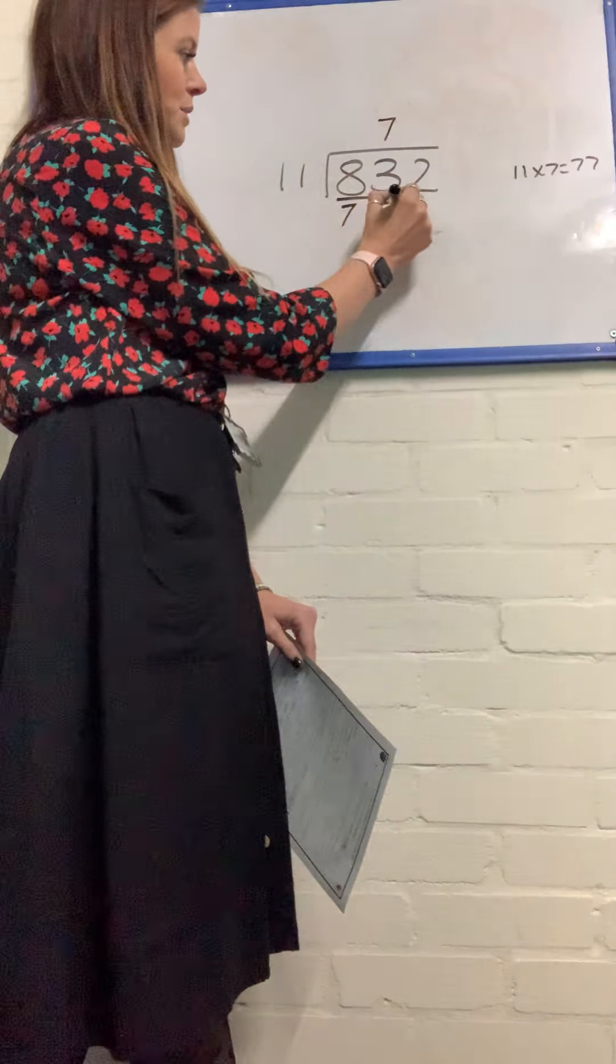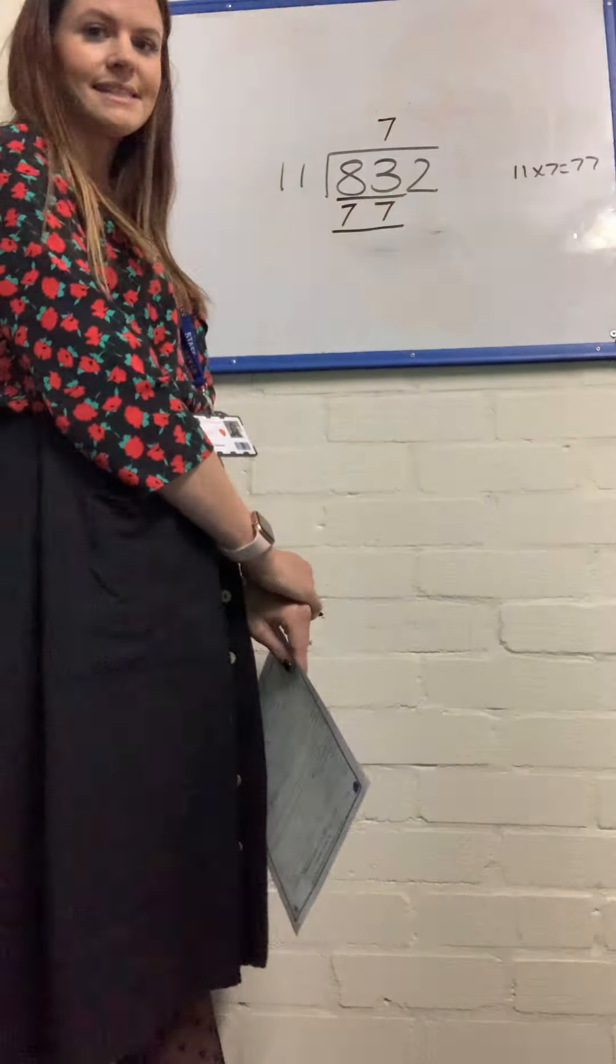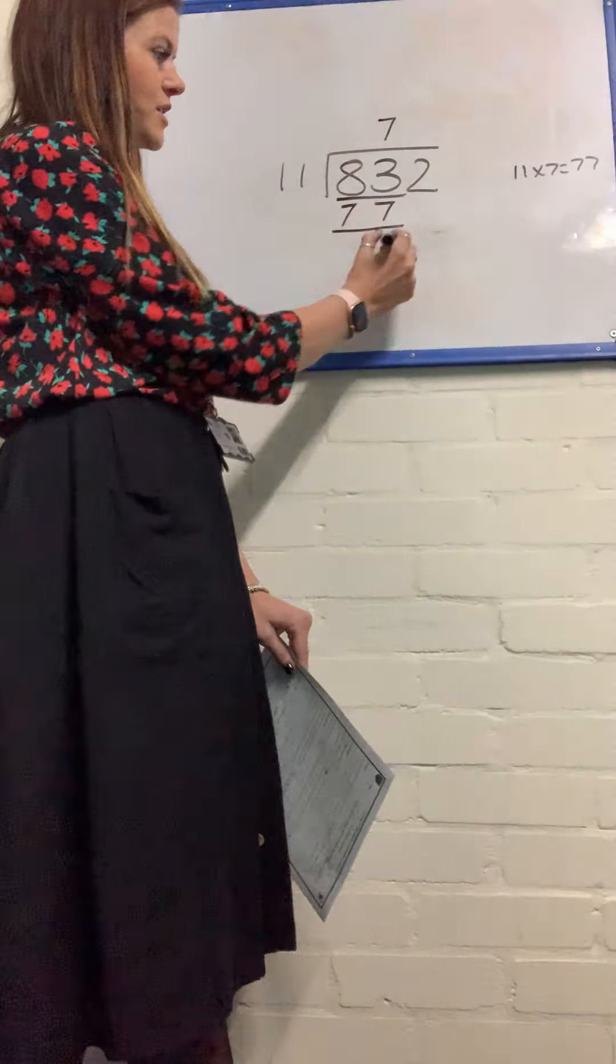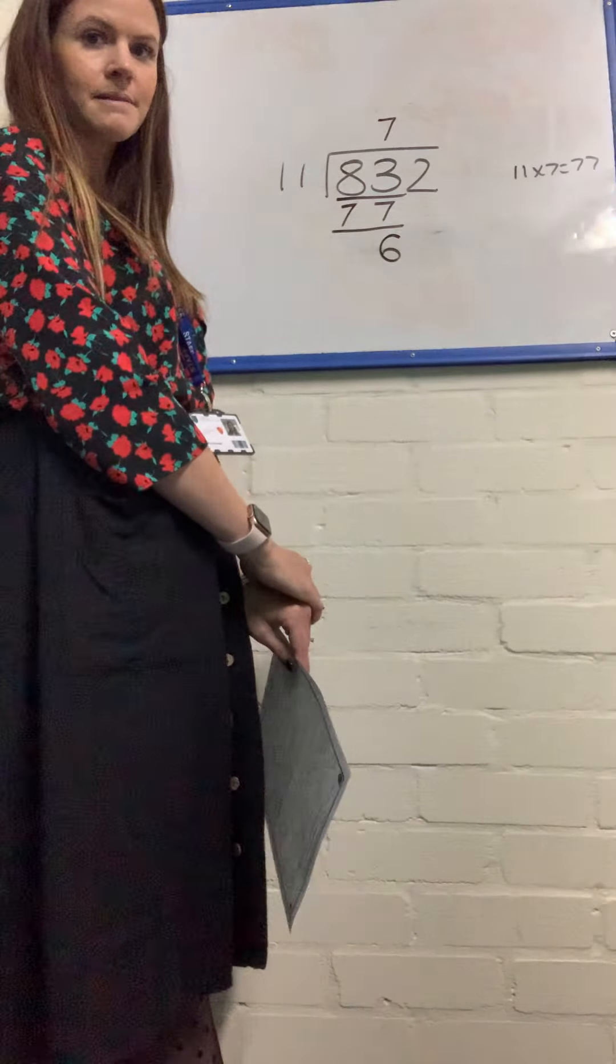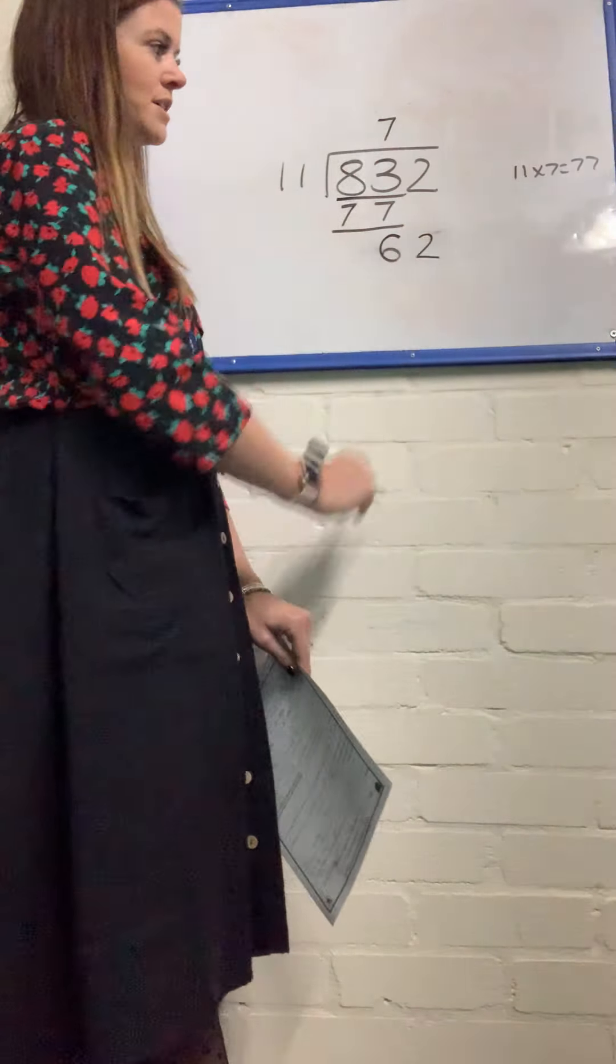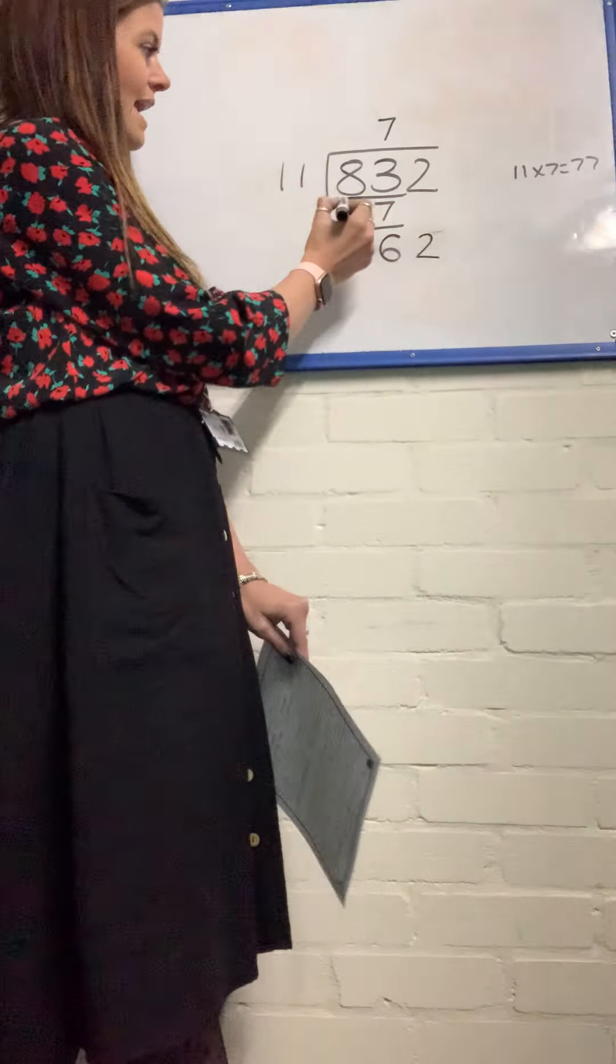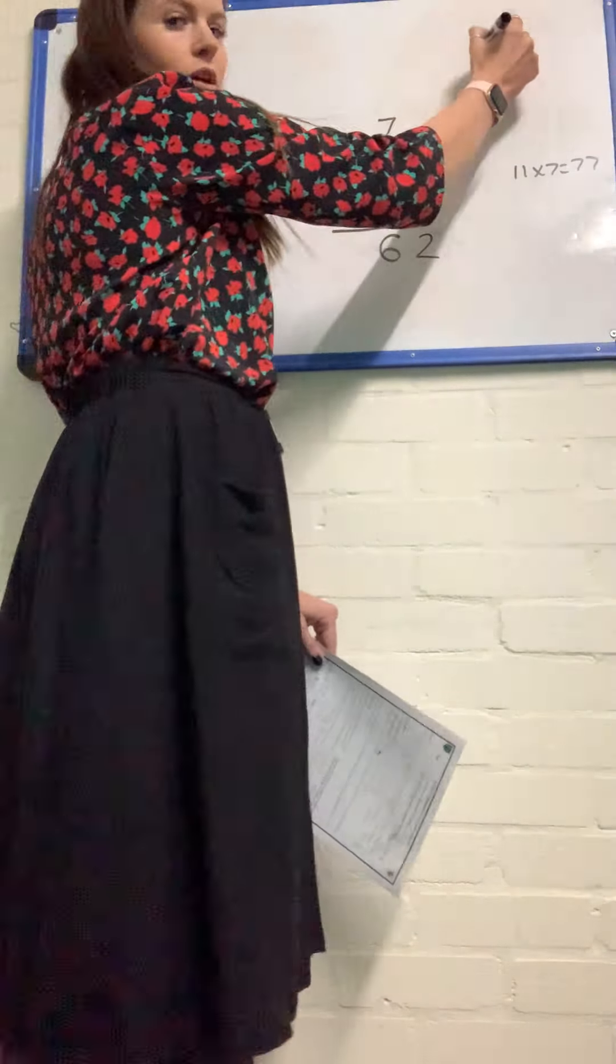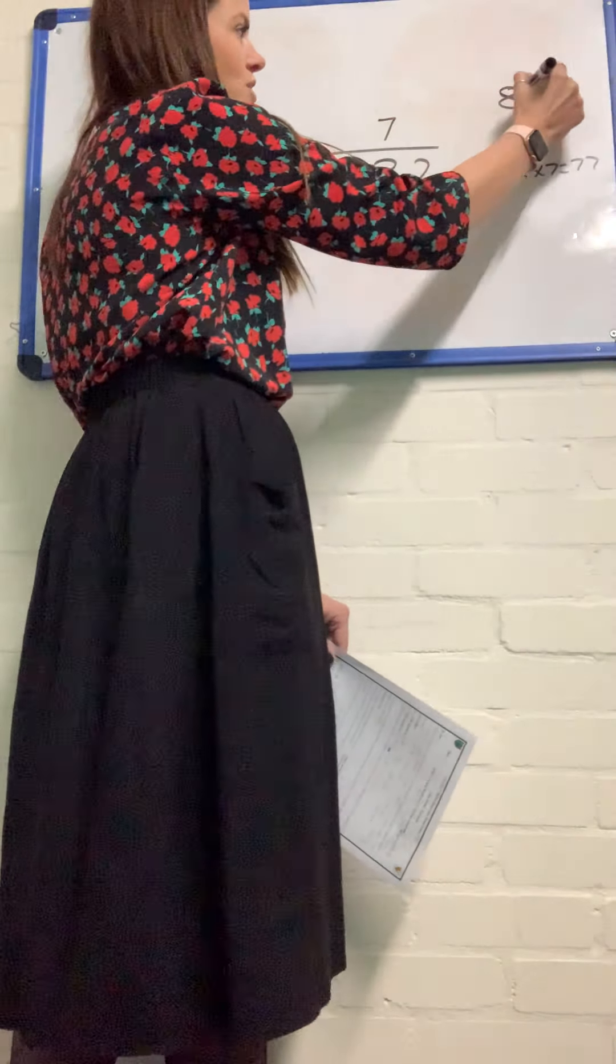I'm going to put my closest multiple underneath, which is 77 or 770. The difference between these two numbers is 6. And then I'm left with the last part of my dividend, which is 62.